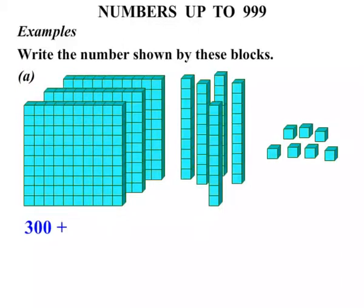Then we write plus. Now these longs are worth 10 each, so let's count in tens. 10, 20, 30, 40, 50. So we are adding 50 with that. We write plus again. And these shorts are just worth 1 each, so just counting in ones. 1, 2, 3, 4, 5, 6, 7. So let's add this now. 300 plus 50, well that's 350, plus another 7 equals 357.